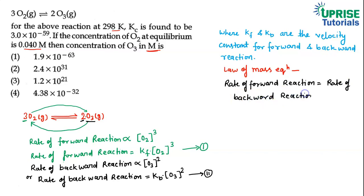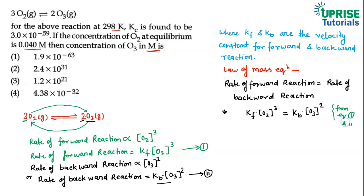So from the law of mass action: rate of forward reaction = rate of backward reaction. From Equations 1 and 2: kf × [O₂]³ = kb × [O₃]². Rearranging, kf / kb = [O₃]² / [O₂]³.